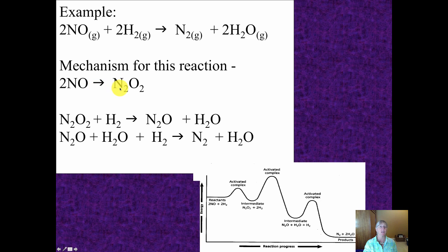So first, nitrogen monoxide turns into dinitrogen dioxide. Then dinitrogen dioxide reacts with hydrogen to turn into dinitrogen monoxide and water, and so on until you get to the third step that you can see here. So it's not just a one-step process. It's a three-step process. Each of the three reactions that you see here correspond to each of these energy diagrams that you see in this picture on the bottom right.